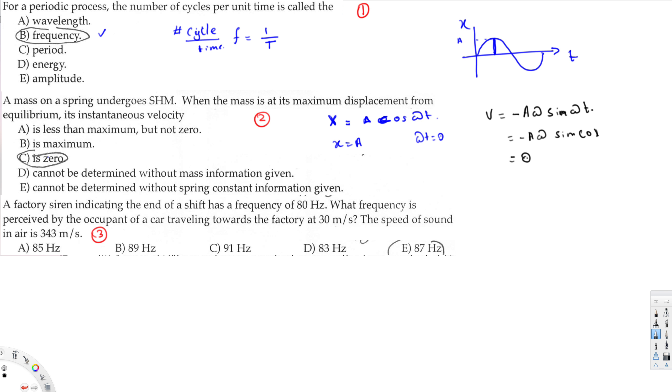The third one is asking: a factory siren indicating the end of the shift has a frequency of 80 Hertz. So the factory, this is the one that is producing the sound. This is called the source, so this is F source.